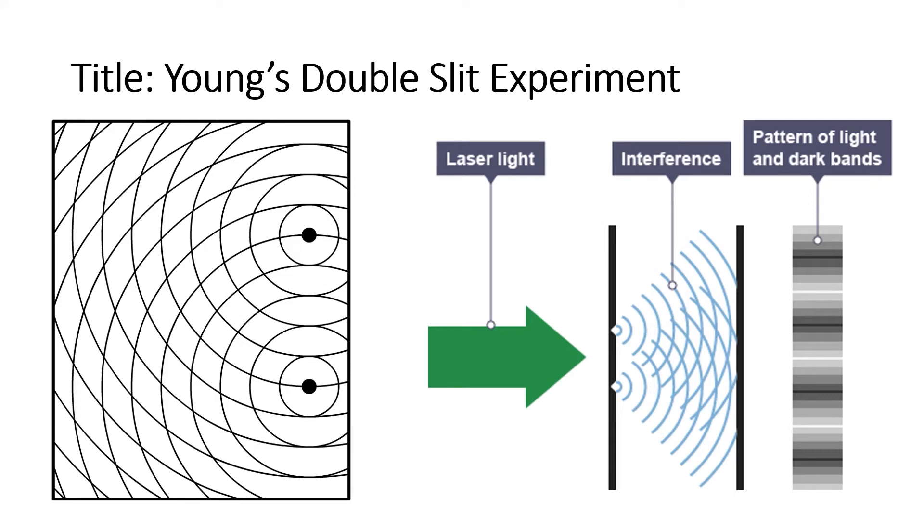Hello. Today we're going to talk about Young's double slit experiment. We'll start by recalling the principle of superposition, and then talk about how interference patterns are formed, and then finally we'll get into the specifics of the double slit experiment.